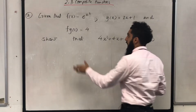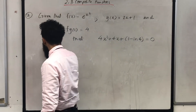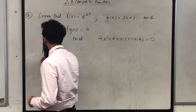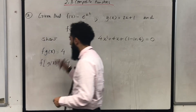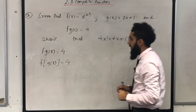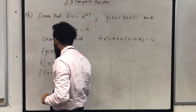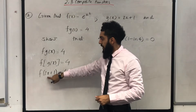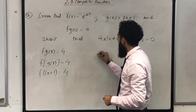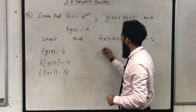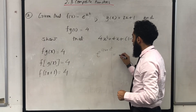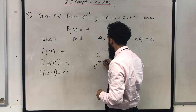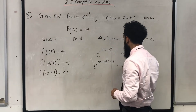First of all, I'm going to start off with f(g(x)) = 4. I know that I can rewrite this equation as f in square bracket g(x) = 4. My input is g(x); I know what g(x) is — it's 2x + 1. So I can rewrite this as f(2x + 1) = 4. Now I need to look at the function f and replace the x with 2x + 1, giving e^((2x + 1)²) = 4. Expanding the bracket, I obtain 4x² + 4x + 1 inside the exponent, equal to 4.